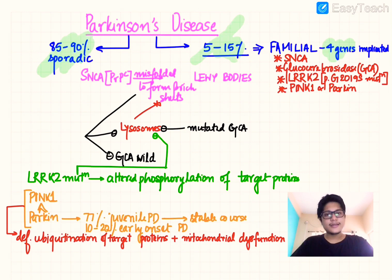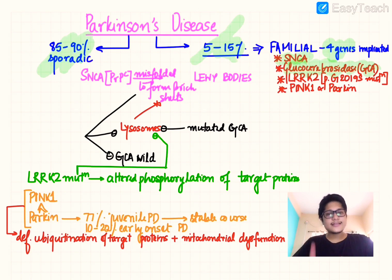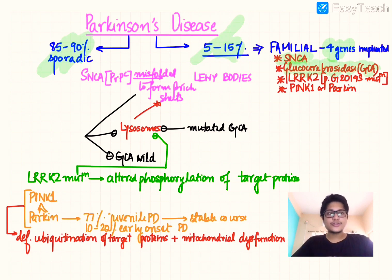The four genes implicated in Parkinson's disease are: SNCA, then the glucocerebrosidase gene GBA — interestingly, this gene is also implicated in Gaucher's disease, and scientists observed that relatives of Gaucher's disease patients often had Parkinson's disease, leading to the discovery of GBA's role in Parkinson's as well.